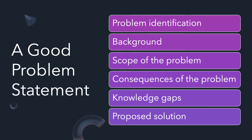When you write your problem statement, you want to identify what is problematic, what you need to fix, or why it isn't understood. A good problem statement generally has problem identification, background, scope of the problem, consequences of the problem, knowledge gaps, and a proposed solution. Begin by asking: What is wrong with the current nursing practice? What is the nature of the nursing problem, and what do you want to understand about it? Is it a big nursing problem — how many nurses or patients does it affect? What will it cost to fix the problem? What do you not know about the nursing problem? And finally, how will your study help to address and find a solution to this problem?